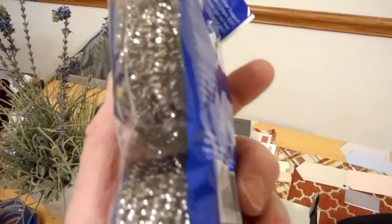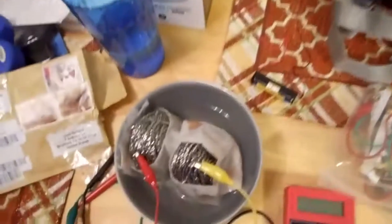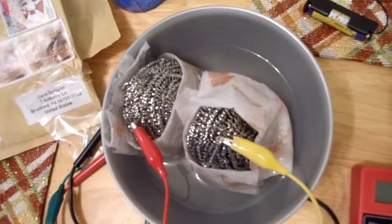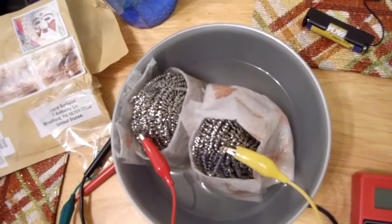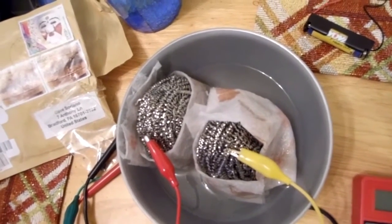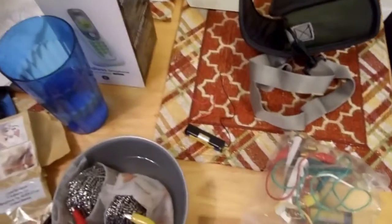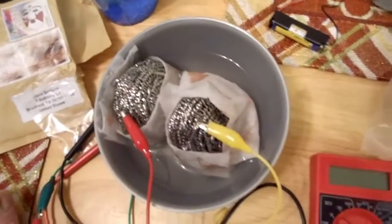Stainless steel scrubbers wrapped up in paper towel. The electrolyte is Epsom salt, magnesium sulfate heptahydrate in water. You can get that in the drugstore or grocery store. Lidmotor had a video on this.